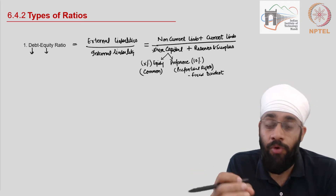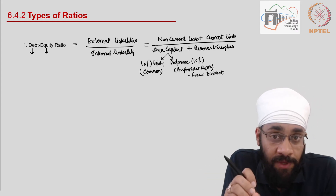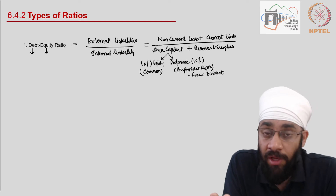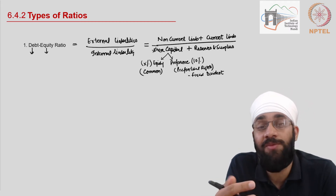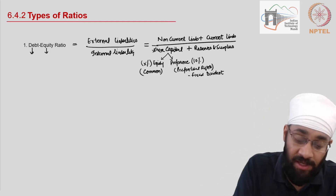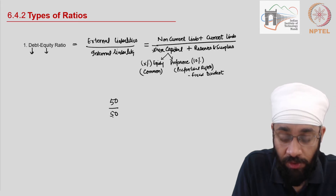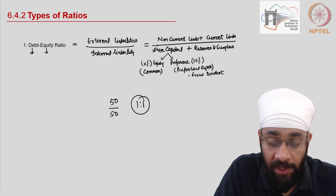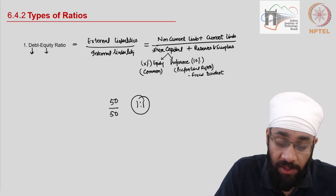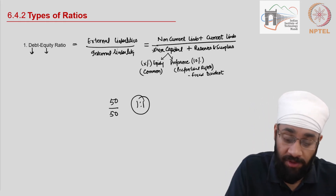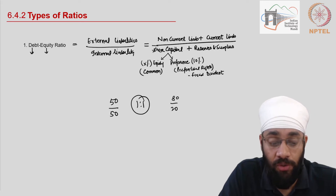When you go to outside parties — for example, a bank to raise a loan — they will also look at this ratio. The bank asks you to prepare a project report: how much money will you make, how will you repay the loan, how much are you investing yourself versus how much you want them to invest. If you say 50-50, the bank may say the risk is too much and instead require you to invest 80 while they invest only 20.